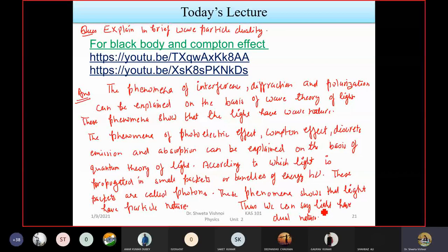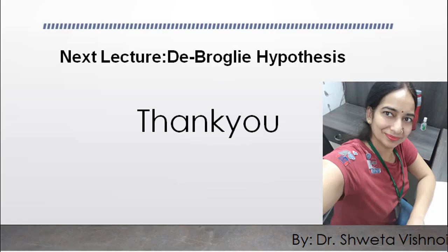The phenomena of interference, diffraction, and polarization can be explained on the basis of the wave theory of light — these phenomena show that light has wave nature. The phenomena of photoelectric effect, Compton effect, discrete emission and absorption can be explained on the basis of the quantum theory of light, according to which light is propagated in small packets or bundles of energy hν; these packets are called photons or quanta. These phenomena show that light has particle nature. Thus we can say light has dual nature. In 1923–24, De Broglie proposed wave-particle duality.